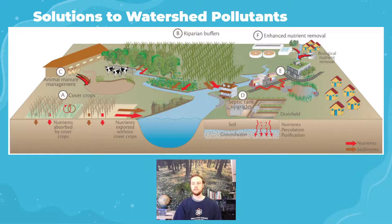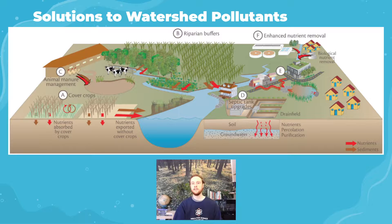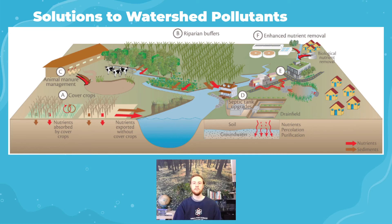For human sewage, septic tank upgrades can optimize the drain field to slow sewage drainage, allowing natural ground filtration and preventing overflow into nearby surface waters. Biological waste removal uses microbes to consume waste and utilize nutrients before they're released into the river. These represent a wide range of options for reducing nutrient and sediment inputs into bodies of water.